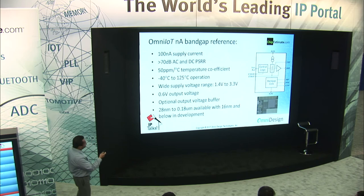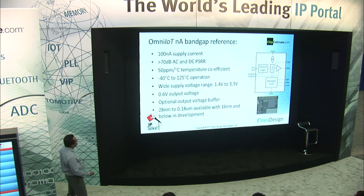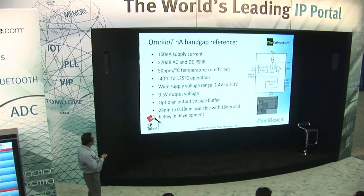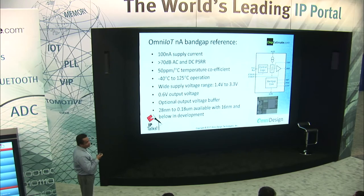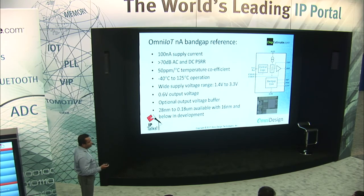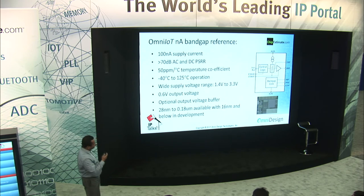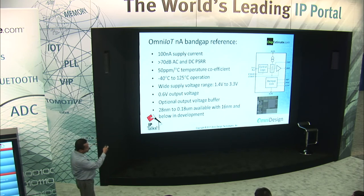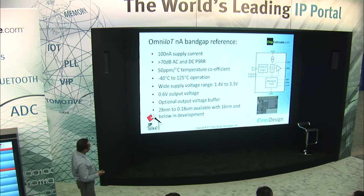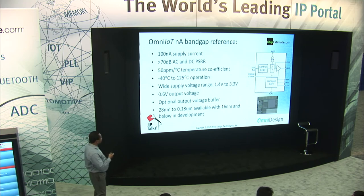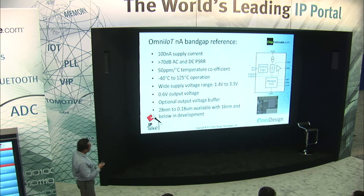Here's an example of a real design we did for one of our customers: 100 nanoampere supply current, 70 dB AC and DC PSRR, 50 PPM temperature coefficient across corners including mismatch, wide supply voltage range with 0.6 volt output voltage. It's available in 28 nanometer to 40 nanometer and other processes.